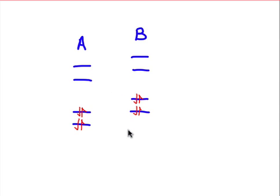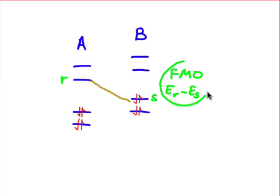At the end, we look for the smallest HOMO-LUMO gap, because that's going to be the case where the energy between r and s are the smallest, and that's going to be the most important term in that equation. That's the FMO result.